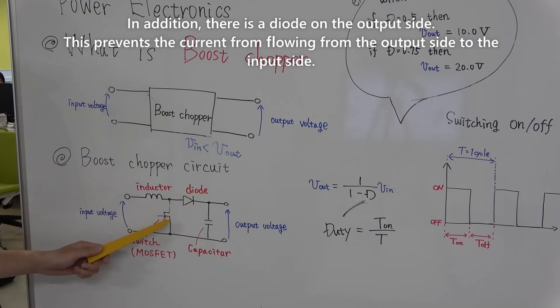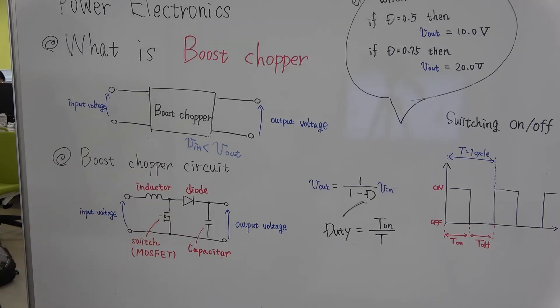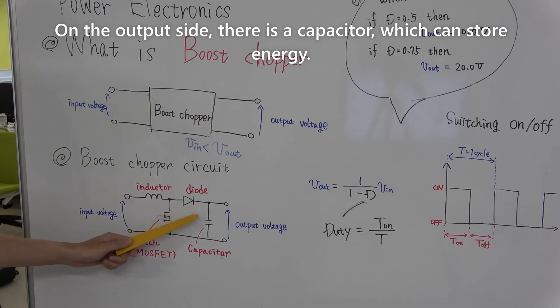On the output side, this prevents the current from flowing from the output side to the input side. On the output side, there is a capacitor, which can store energy.